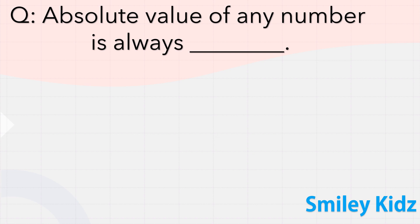Now let's solve a few questions. The absolute value of any number is always — it is positive. The absolute value of any number is always positive.